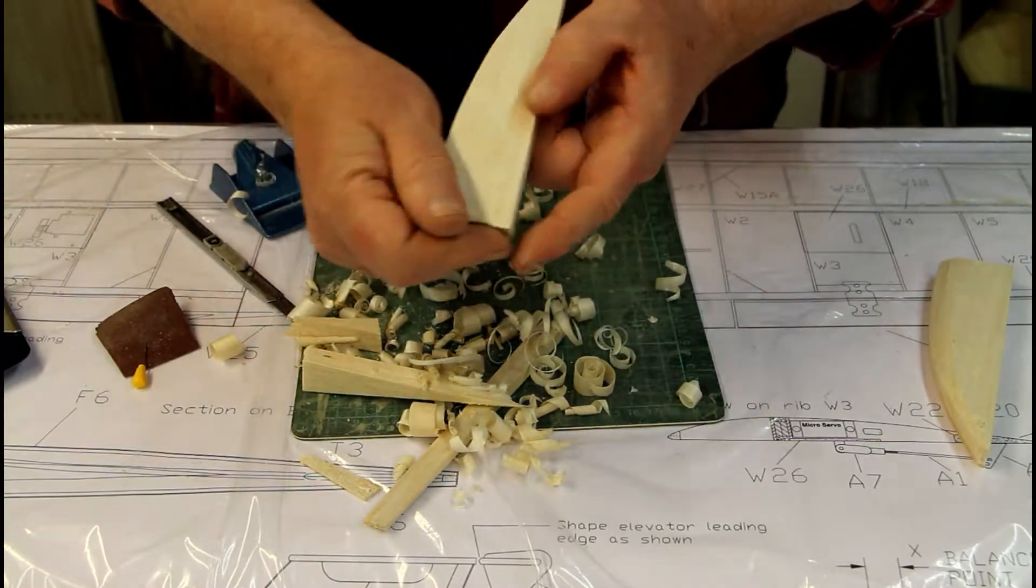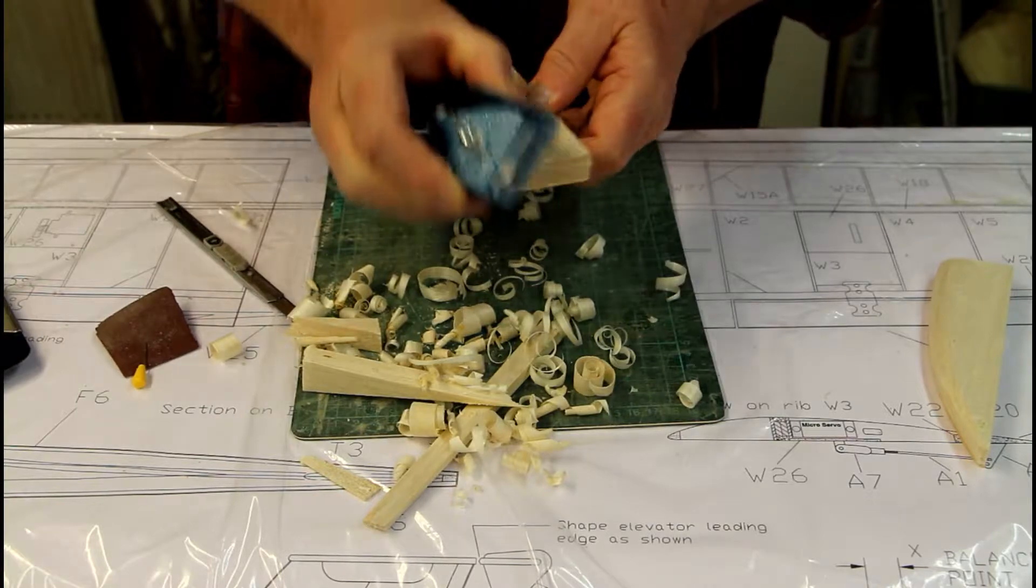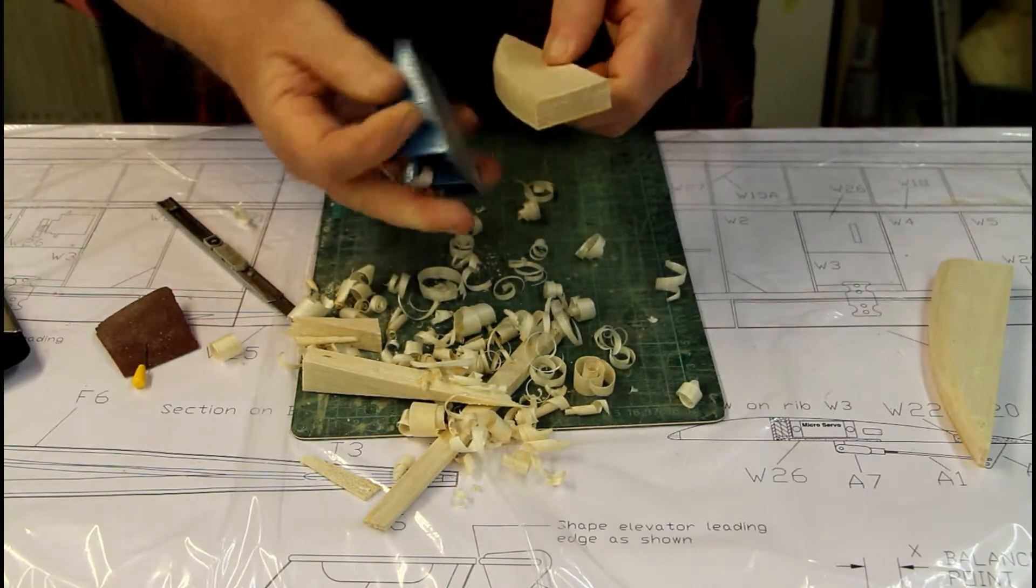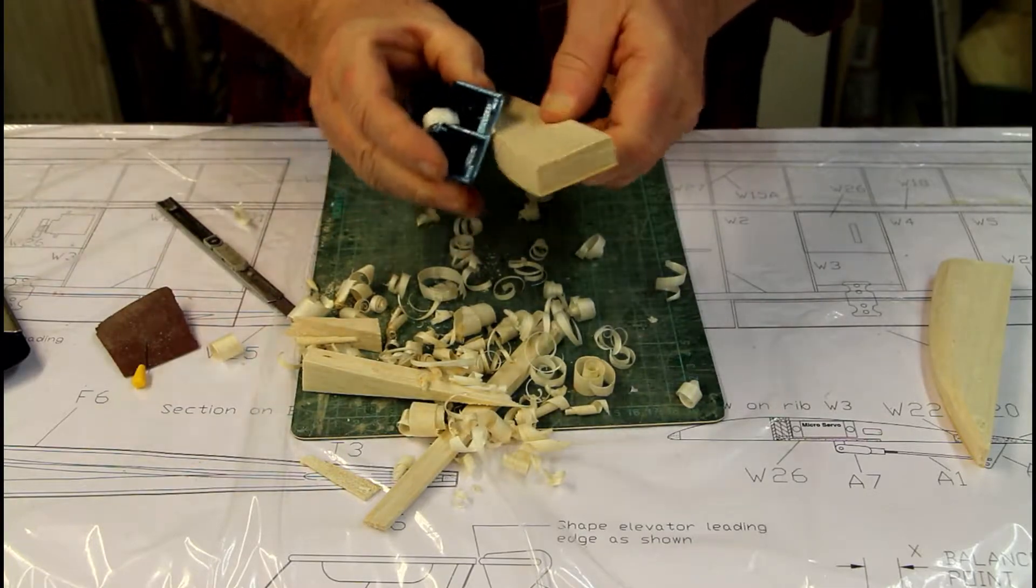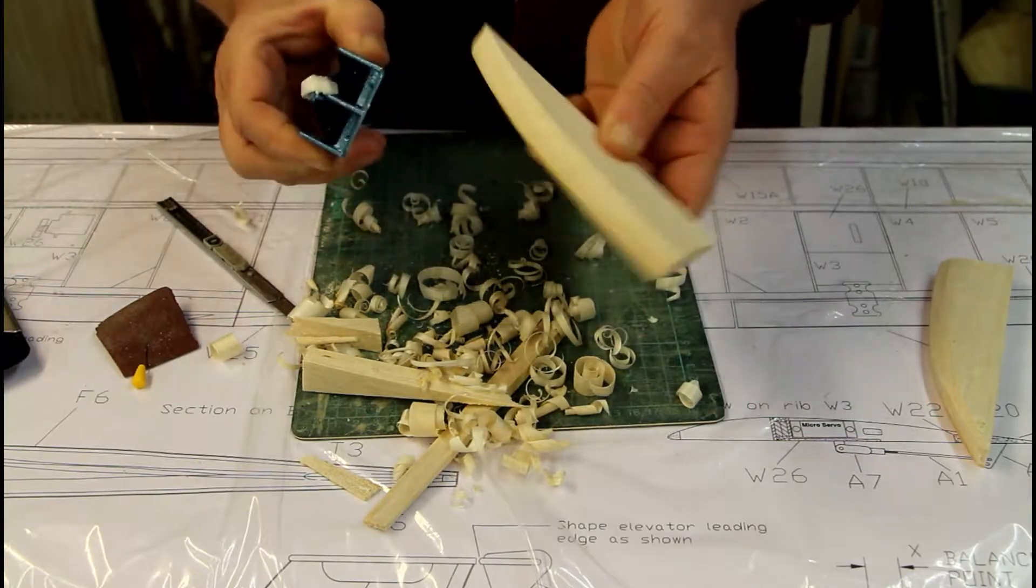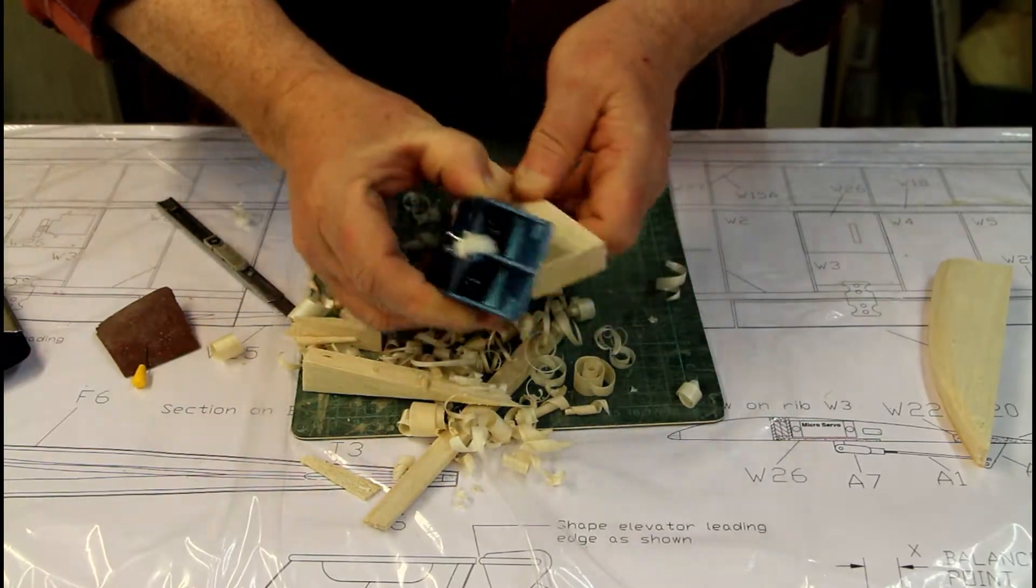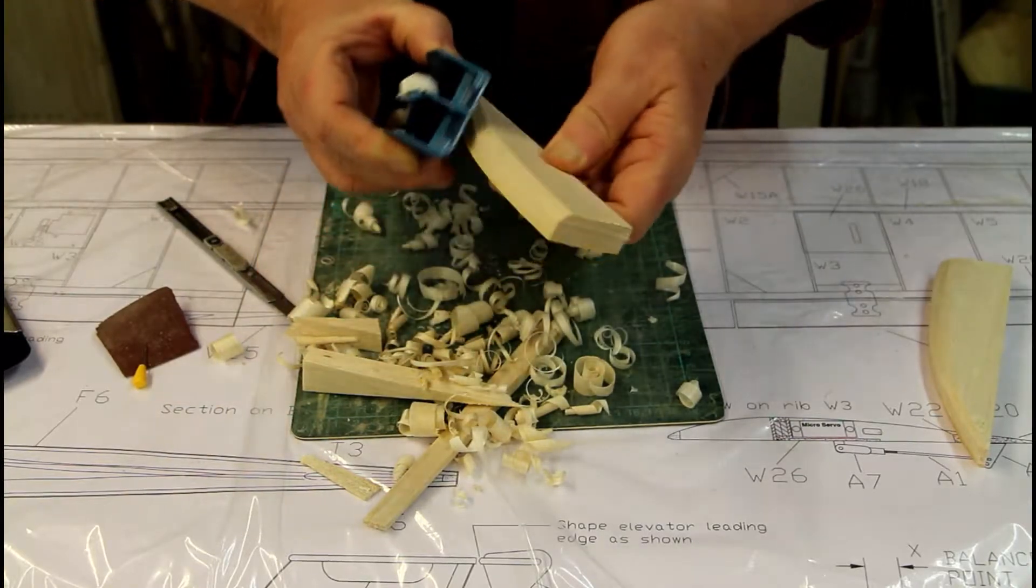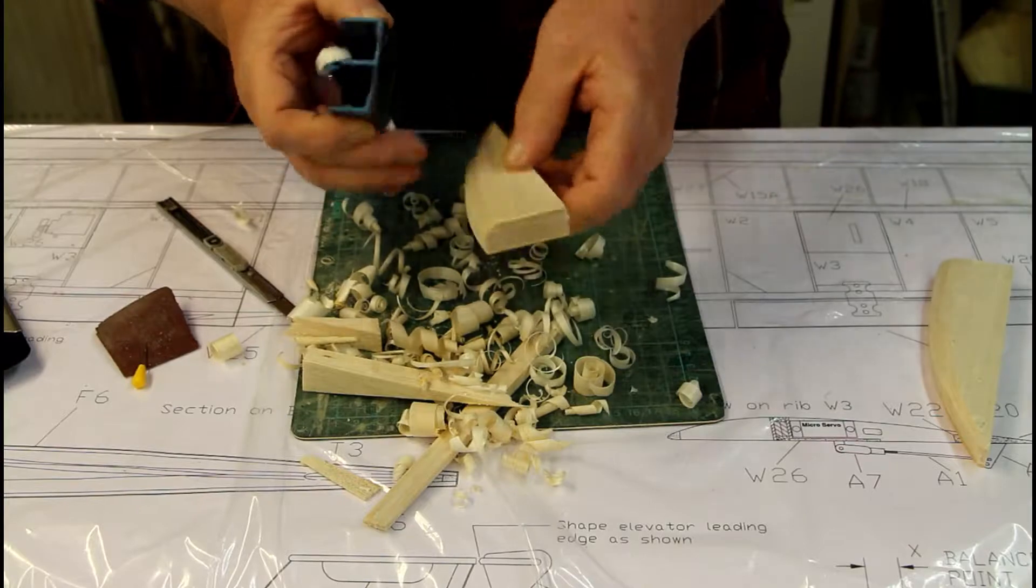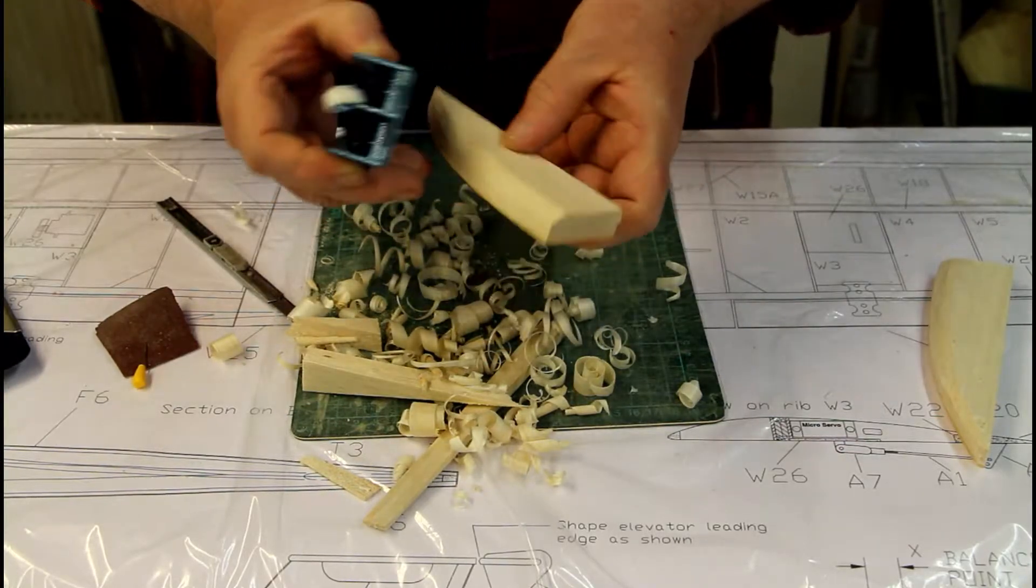Now, you can start taking down the balsa while you're still holding it like this, but it's probably best to glue it onto the wing, onto the end of the wing, and then plane it and sand it on there. Then you have a reference from the rib of the wing.